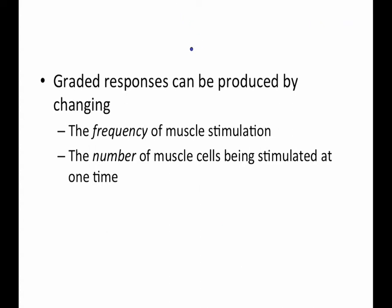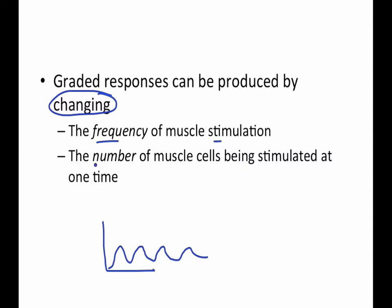You can change a graded response if you change the frequency of muscle stimulation — so if you continuously stimulate the muscle, that will give you some kind of response. You also change the response depending on the number of muscle cells stimulated. Graded responses are based on two things: frequency, meaning the amount of time between each stimulation, and the actual number of muscle cells being stimulated at one time.